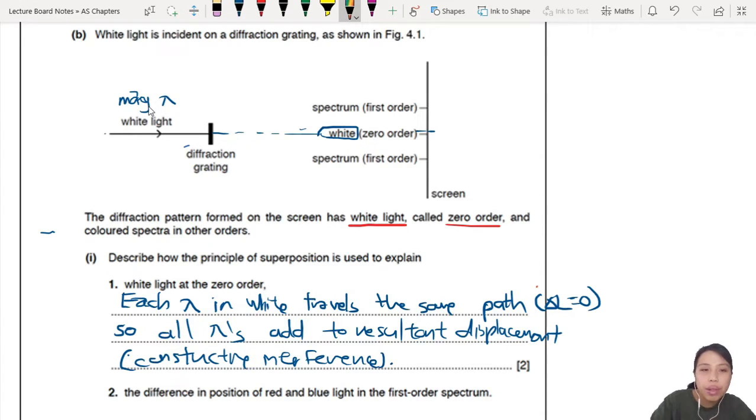And therefore all your wavelengths add up together to become your resultant displacement. And this resultant displacement is all constructive. So I just note here, constructive interference. There, I draw a rainbow for you already.